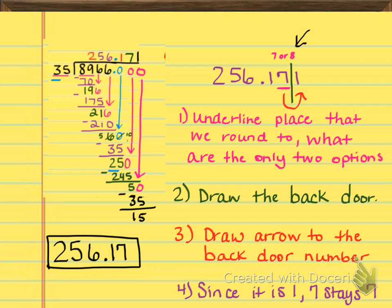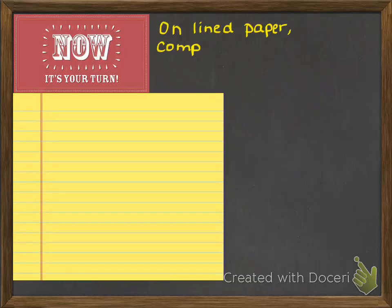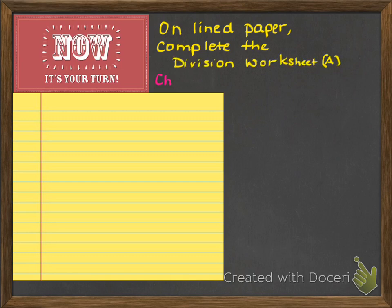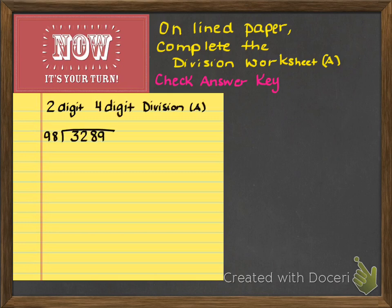All right. So now that you're finished with the problem, let's go ahead and take a look at what I want you to do. You can see now it's your turn. So what I'm asking you to do is on lined paper, go ahead and complete division worksheet A and you want to check the answer key. So this division worksheet A should be on your Canvas page. You should be able to find the worksheet A and B actually. Those are both already posted. And it should say, and actually this one says two digit by four digit. Let me fix that. Hang on one second. Okay, now I fixed it.